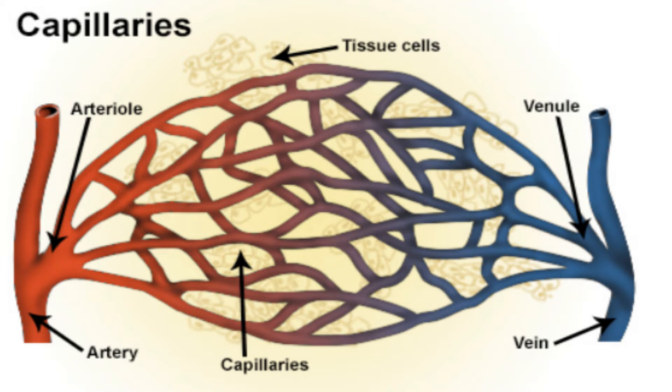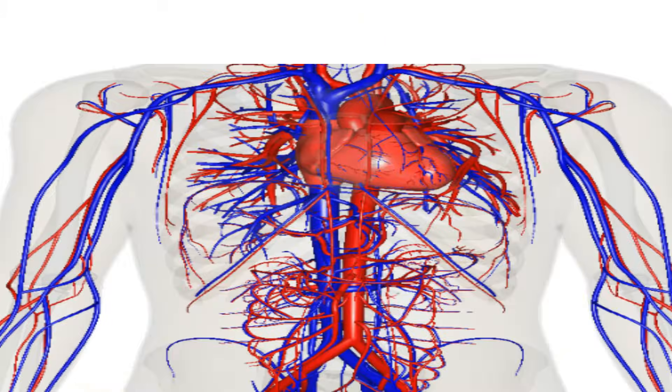To sum it up, the heart pumps blood to the body through the arteries and returns from the body to the heart through the veins.